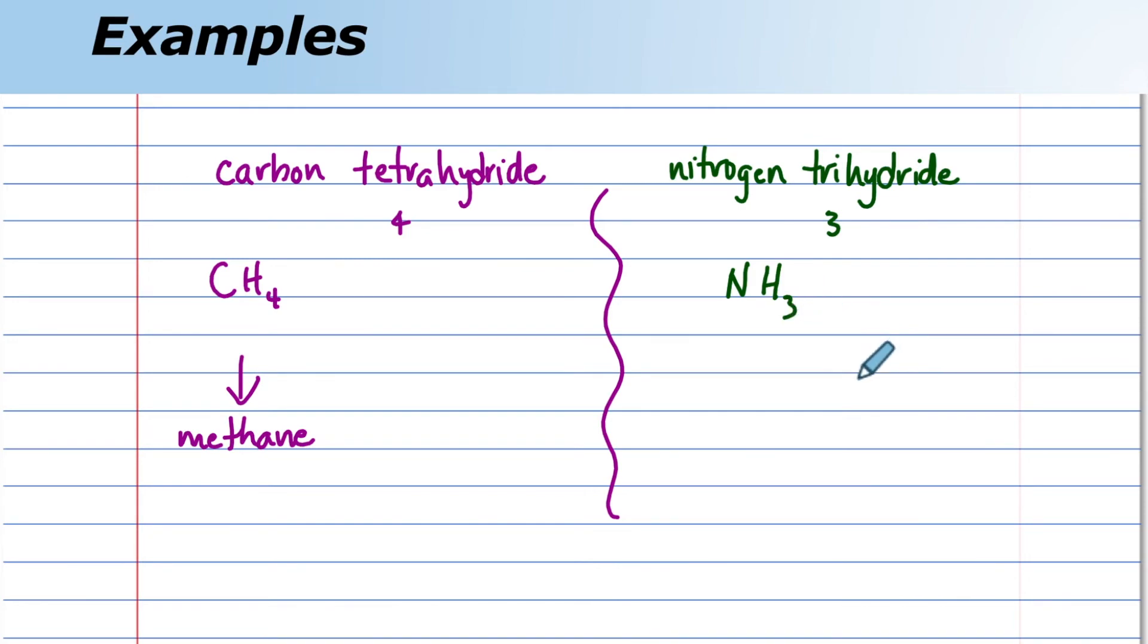And we have 3 atoms. One atom of nitrogen. Three atoms of hydrogen. To make nitrogen trihydride. And you might know that this common name is ammonia.